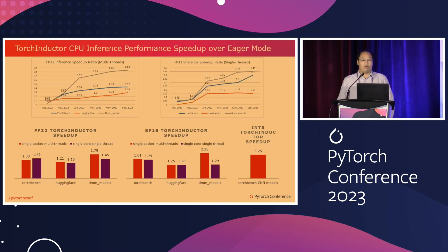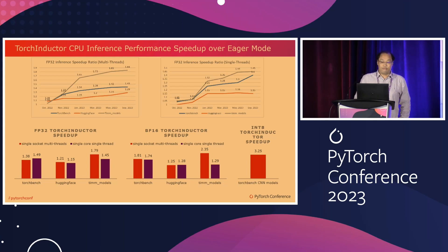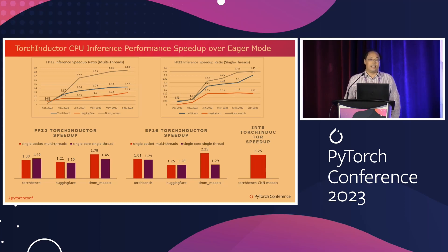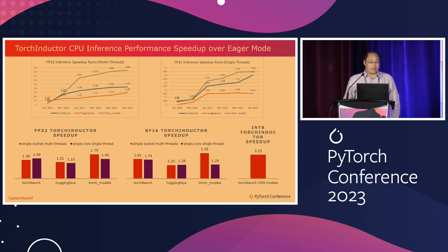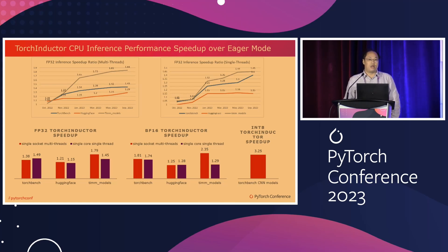Our efforts have yielded significant performance advancements over eager mode. As you can observe from the slide, performance has improved consistently over time, with the best speedups ranging from 1.7x to more than 3x for FP32, BF16, and int8, measured across more than 160 models on three popular benchmark suites: TorchBench, HuggingFace, and TIMM.